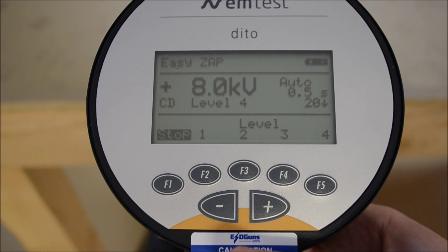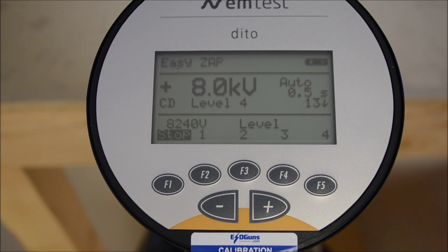As you see, EZZAP mode allows you to select preprogrammed voltage levels. We'll run this sequence by pressing the trigger. Notice the actual voltage output at the test tip is displayed.